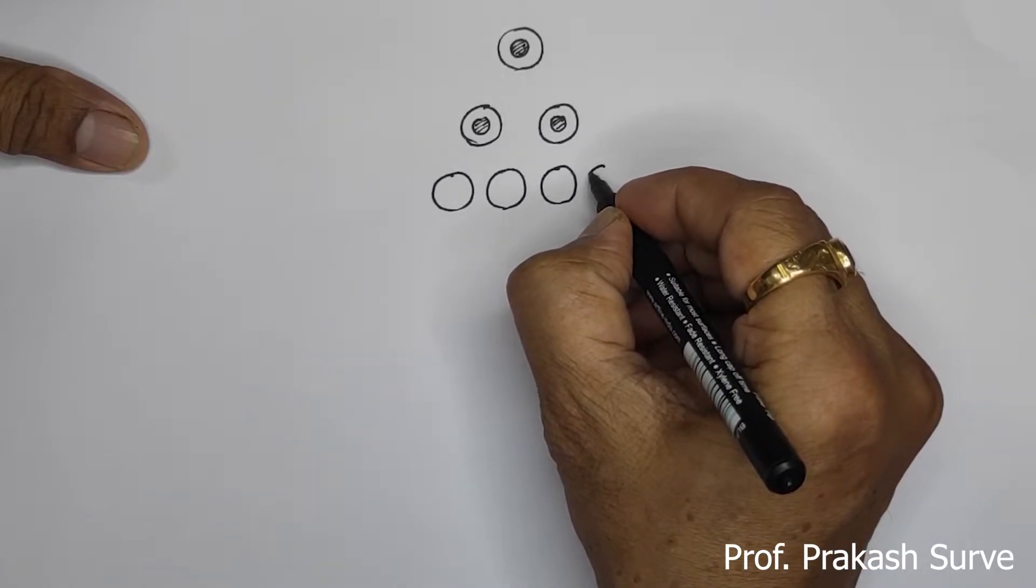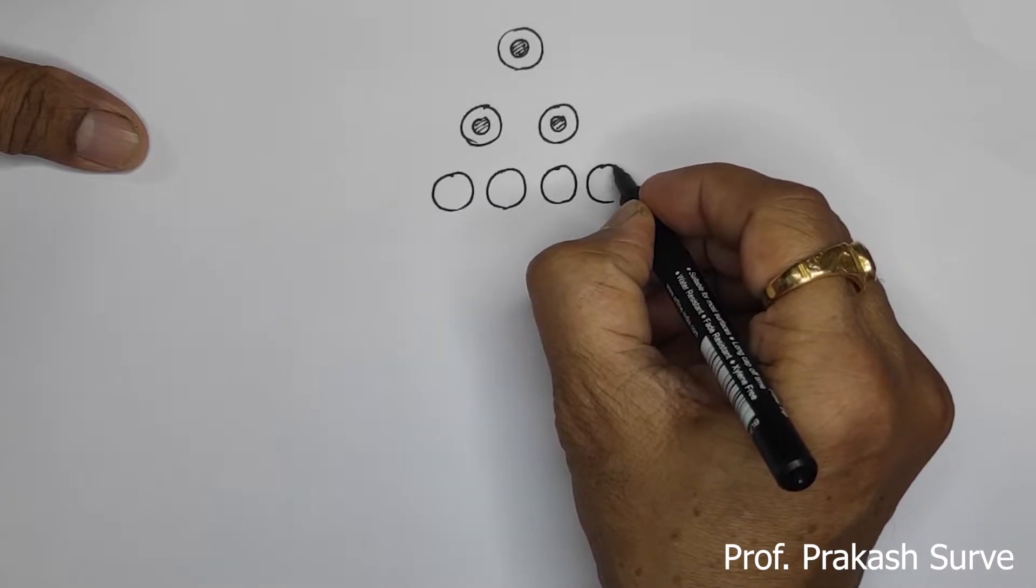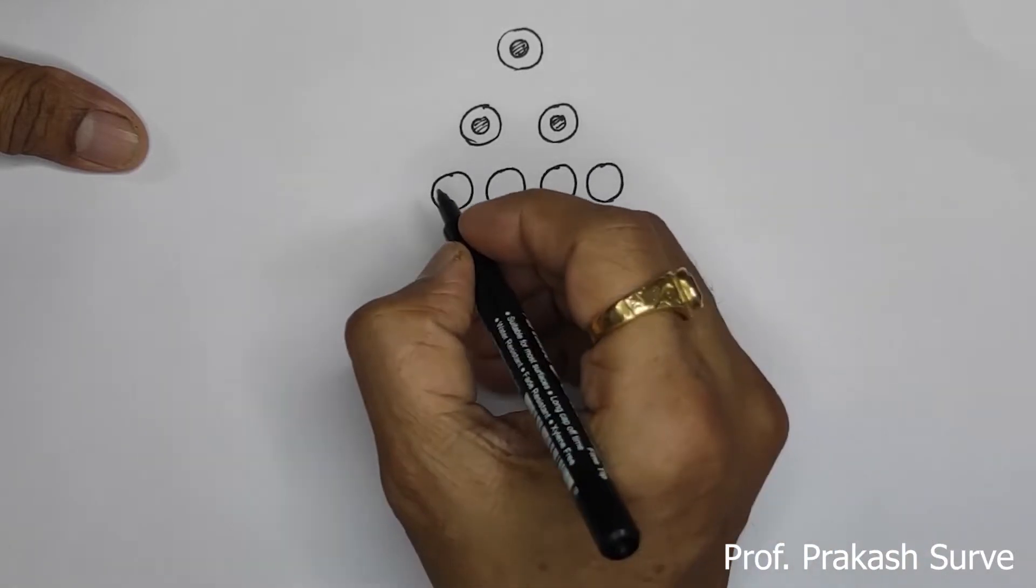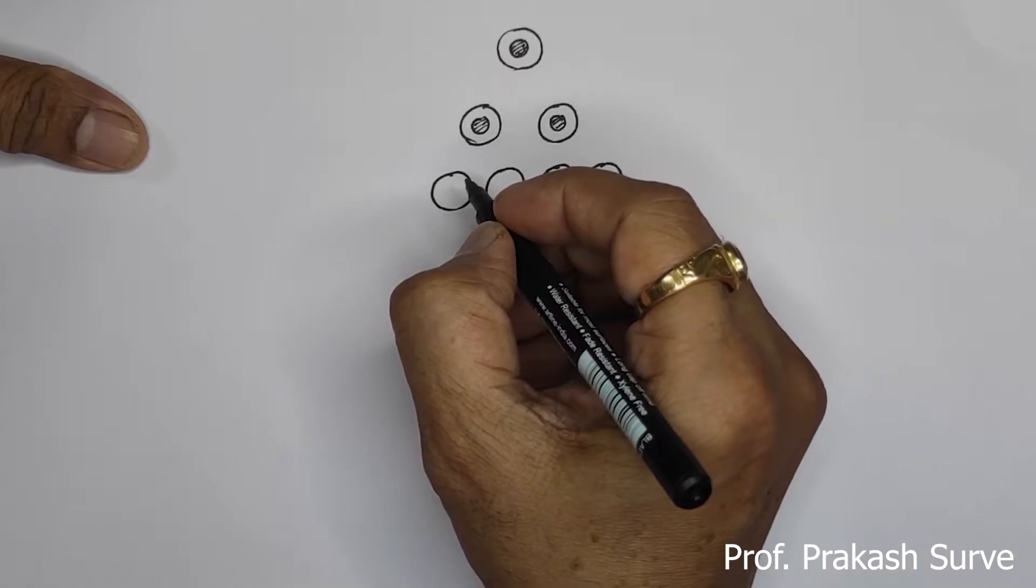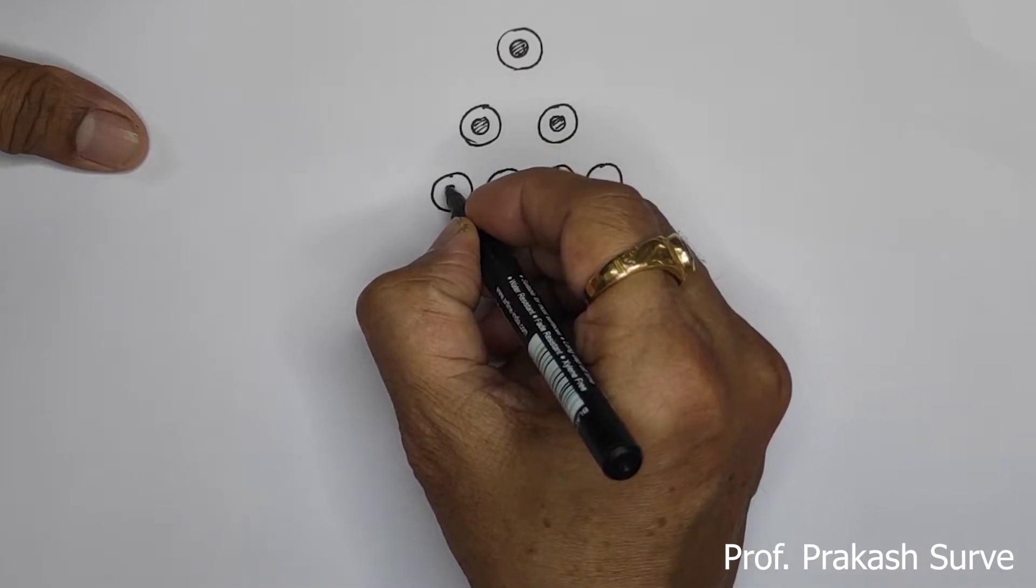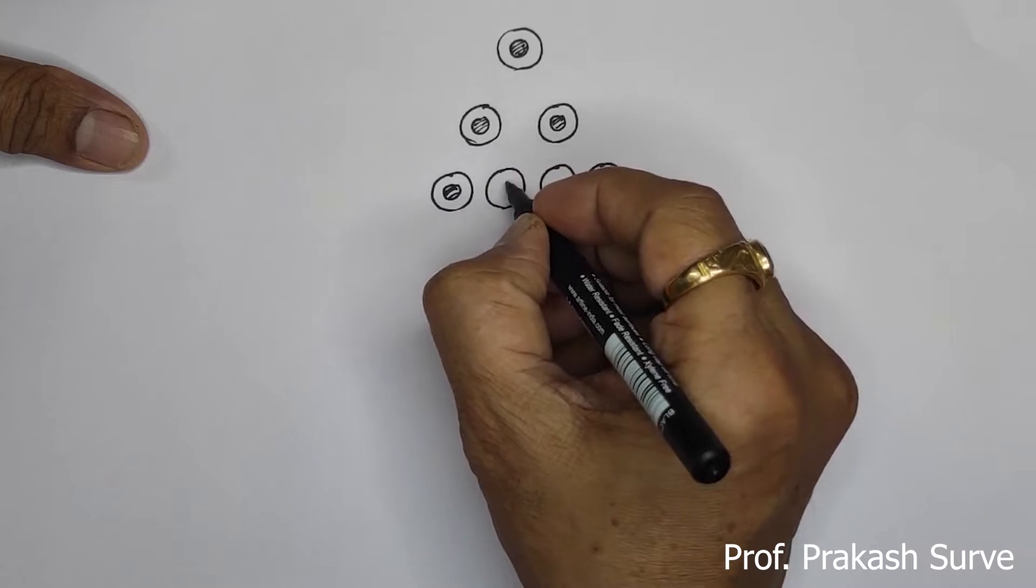From each, again we get two, so here we got a total of four which are the spermatogonia, which are diploid.